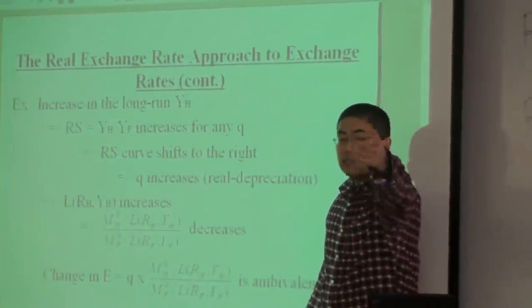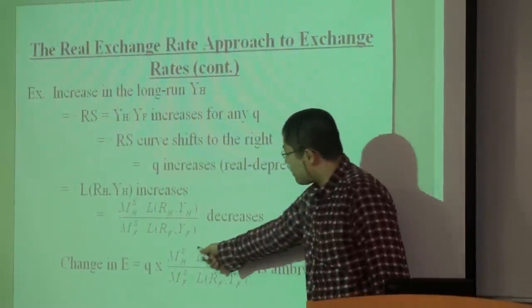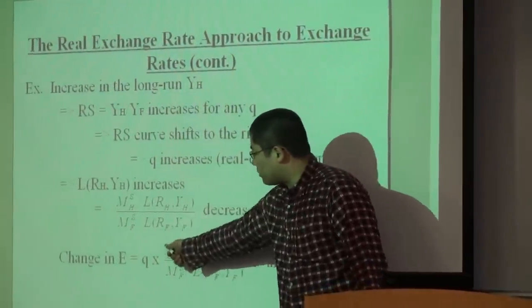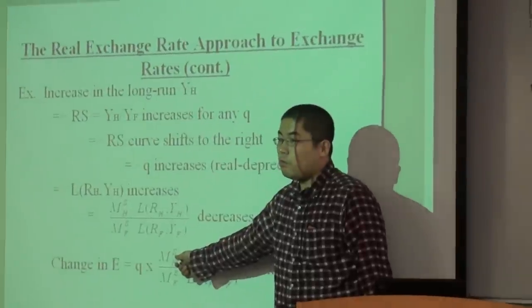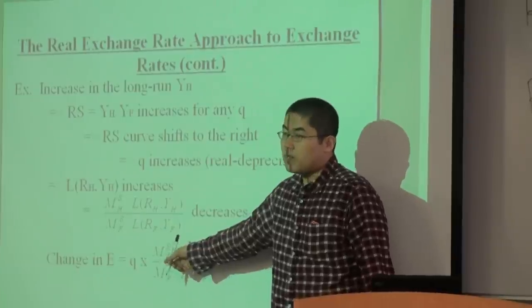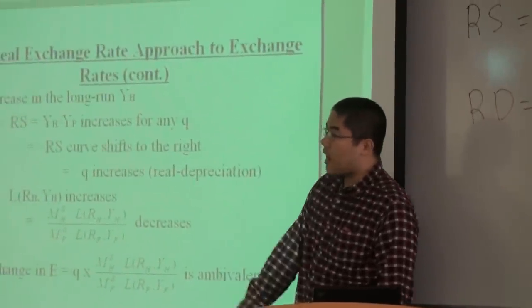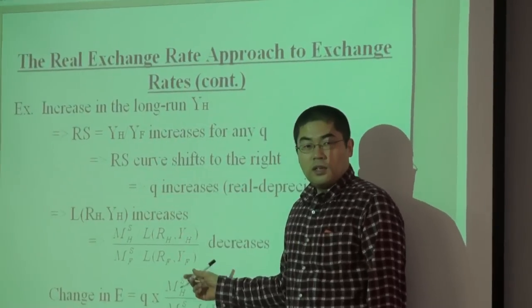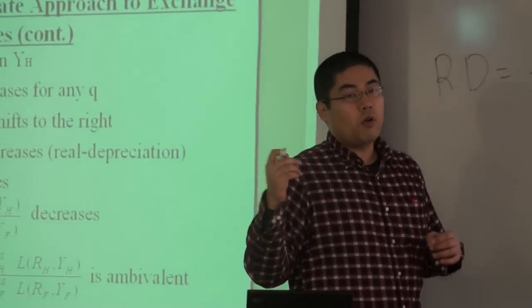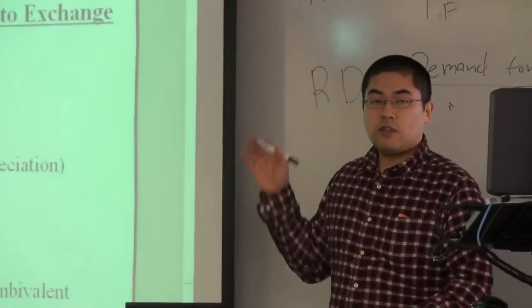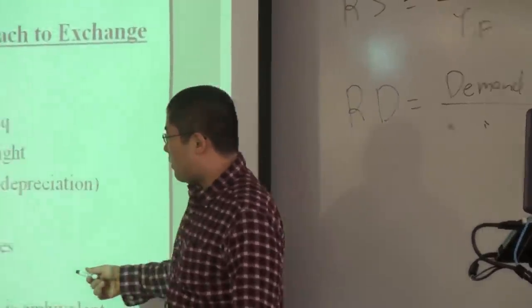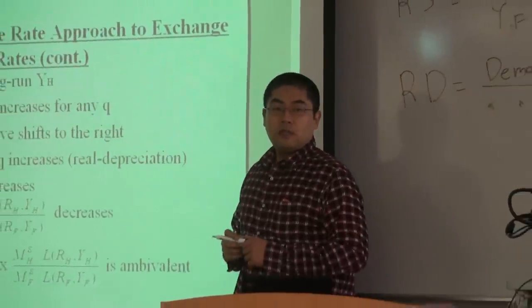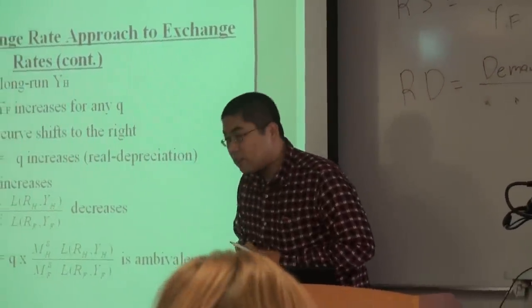However, as Tana says, even though real money demand changes, if central bank changes home money supply level too, central bank can cancel out effect from real money demand. Ta-da! In this case, home central bank needs to increase or decrease to cancel out the change effect from the change in real money demand. They would have to increase money supply. Yes. Everyone okay?